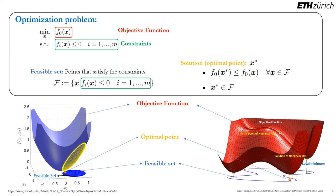There is a very important difference between these two functions. The first function looks like a bowl — it's curved up all the time. While in the second function, there are some places where it's curved up and other places where it curves differently. This difference is called convexity, and that's what we are going to study in the following slide.